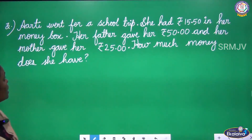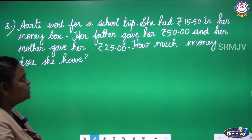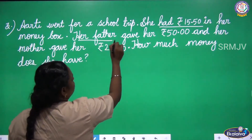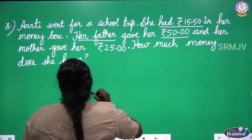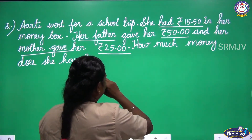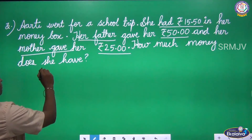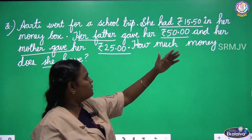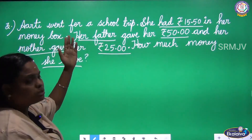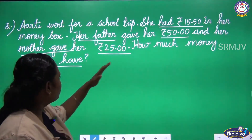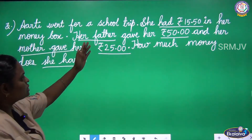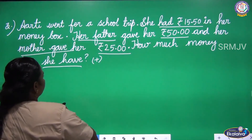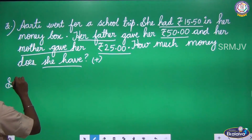Next one: Aarti went for a school trip. She had Rupees 15 Rupees 50 Paise in her money box. Her father gave her Rupees 50 and her mother gave her Rupees 25. How much money does she have now? We are going to add and then find out the answer. Write Solution.